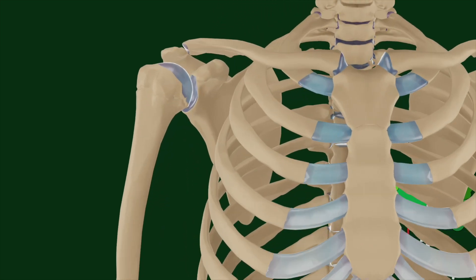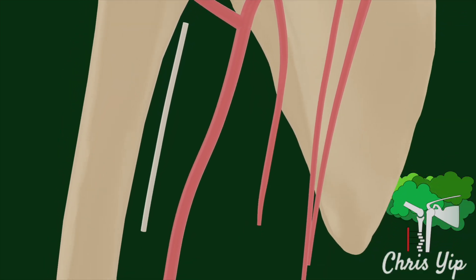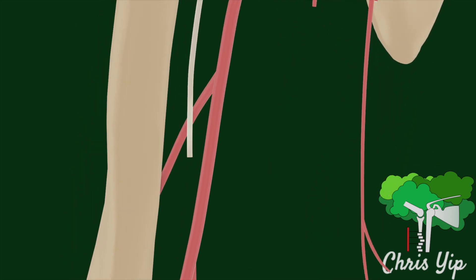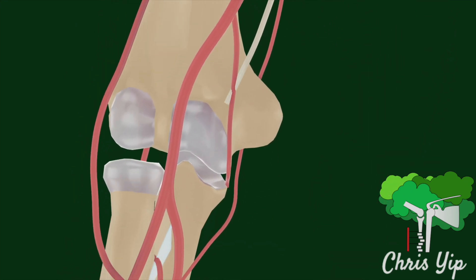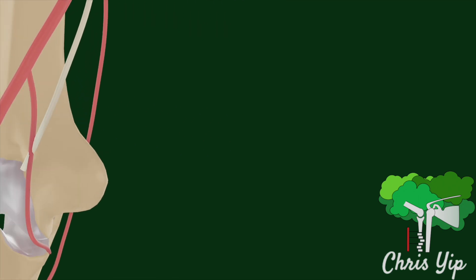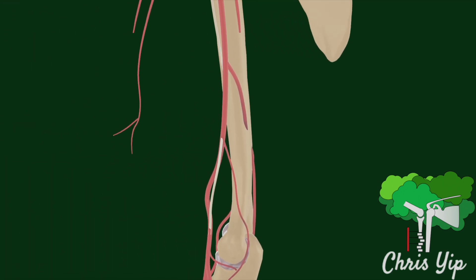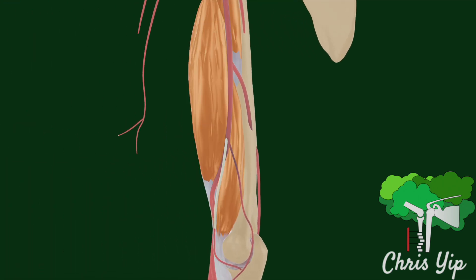Its initial path down the arm is lateral to the brachial artery, eventually crossing it to become medial to it, finally passing anterior to the medial epicondyle. Its whole path in the arm is in the anterior compartment, with muscles such as the biceps brachii.